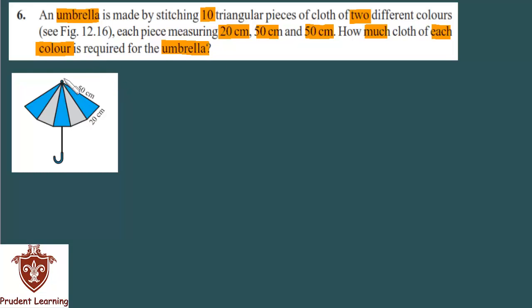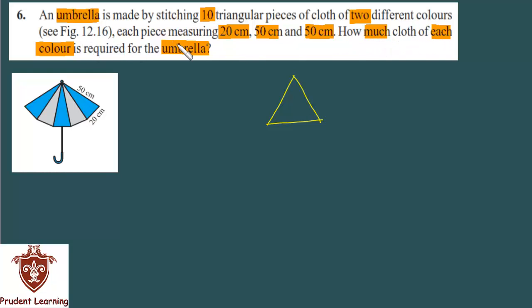This time the question is given. There is an umbrella made by triangular pieces of cloth. Each triangular piece uses two different colors. The sides of each triangle are given: 50 cm, 50 cm and 20 cm.